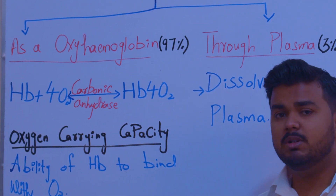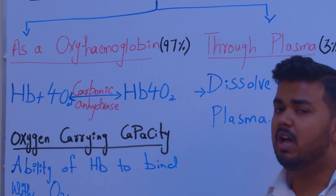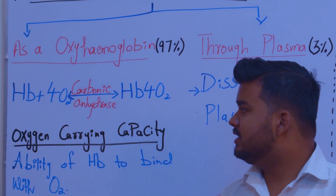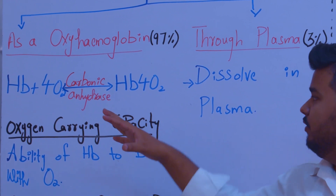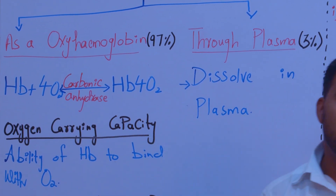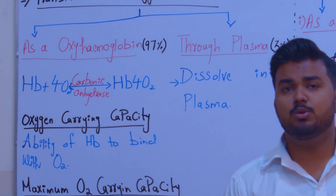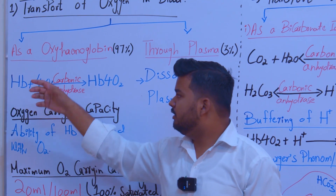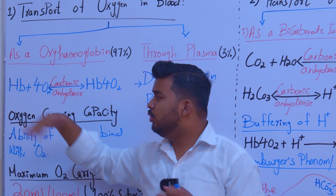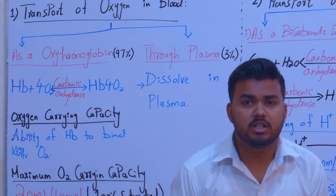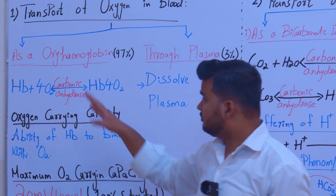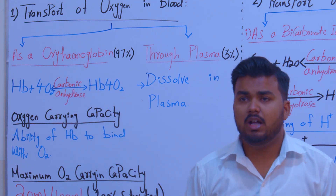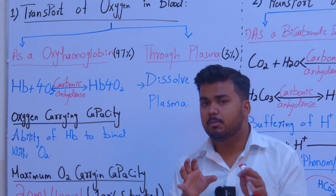When oxygen diffuses into the blood, through a reversible reaction with the help of the enzyme carbonic anhydrase, hemoglobin and oxygen bind to form oxyhemoglobin. So one hemoglobin molecule binds four oxygen molecules to form oxyhemoglobin.